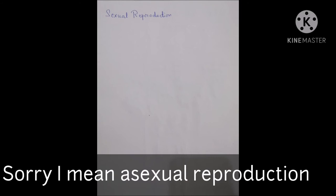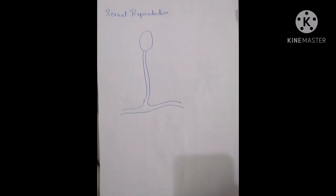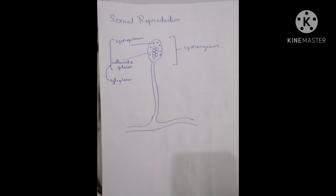During asexual reproduction, cytoplasm or sporangium contains vacuole and nuclei. Vacuole arranges itself in between while nuclei spread across along the sides. The vacuole forms columnella.